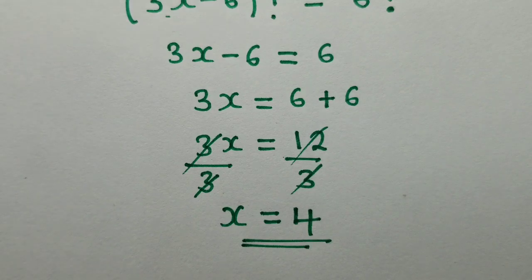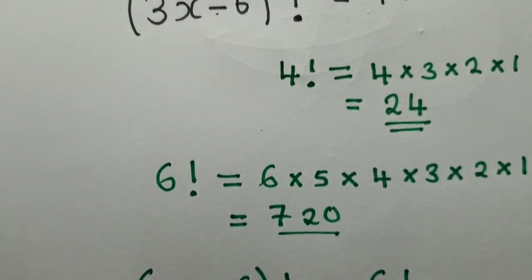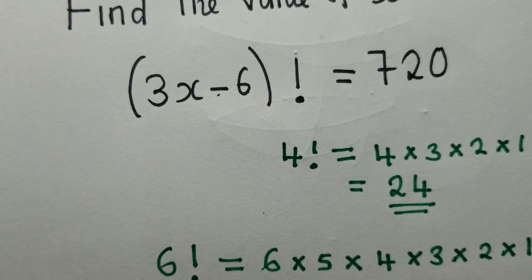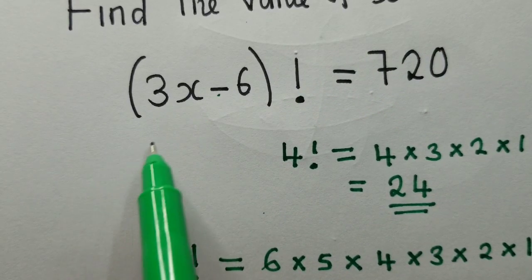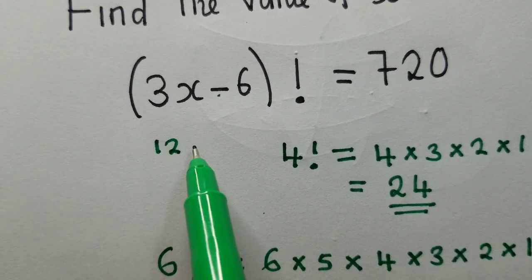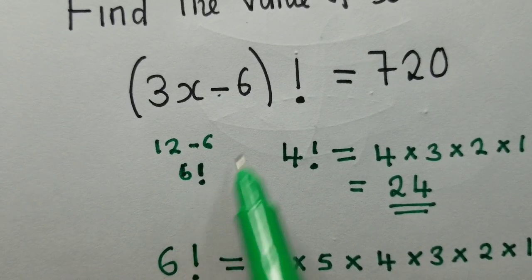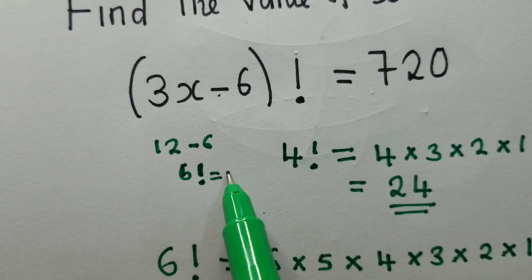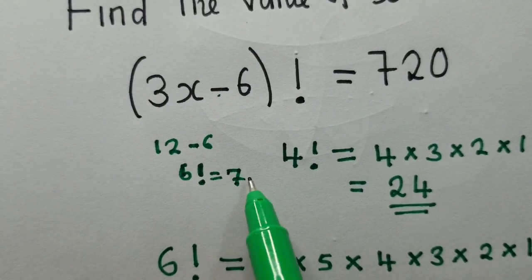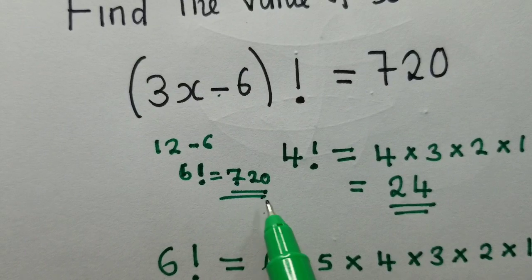If we want, we can even prove. So to prove this, we just substitute 4 right here. So this will simply be equal to 12 minus 6, which will give us 6. So this is 6 factorial, which is giving us 720. So we have proven.